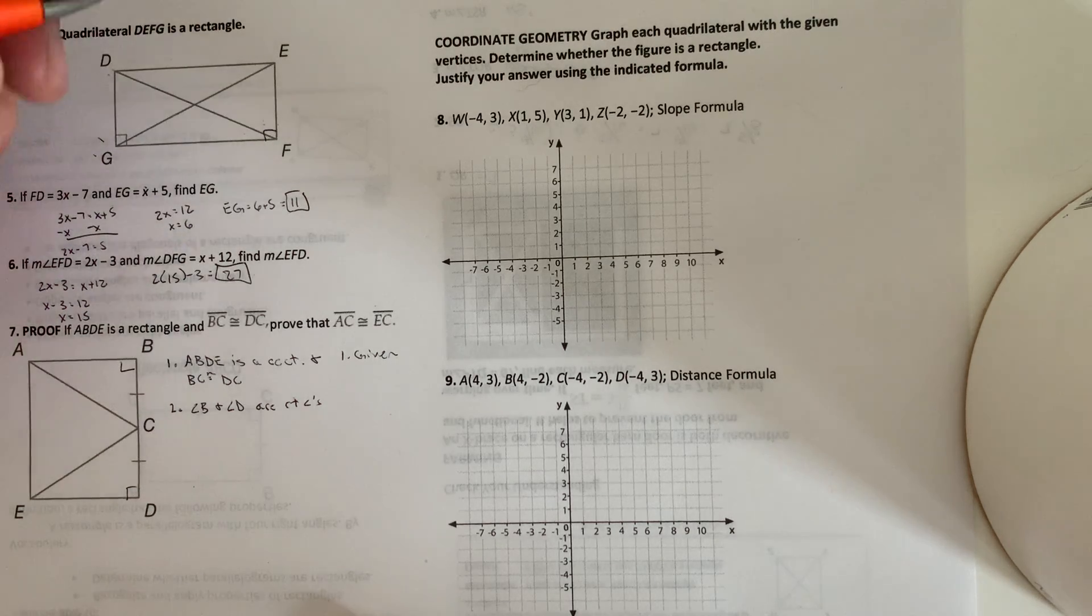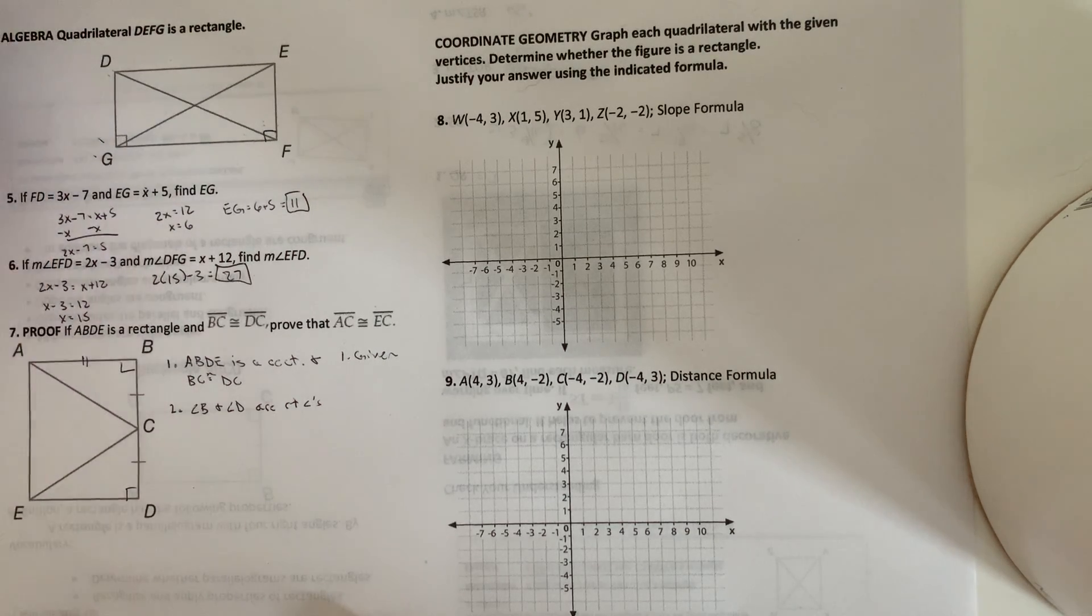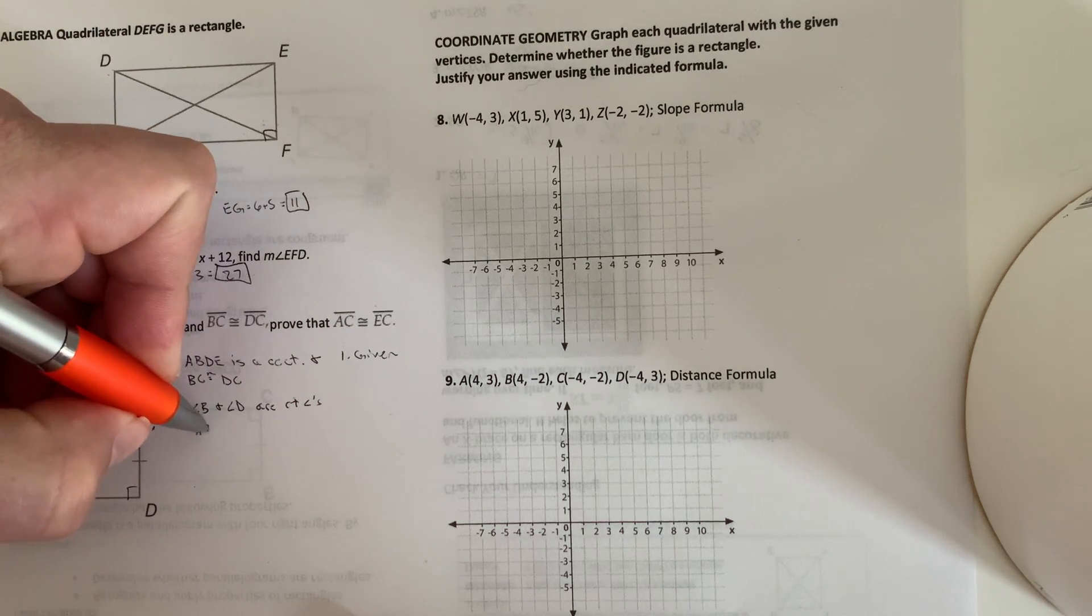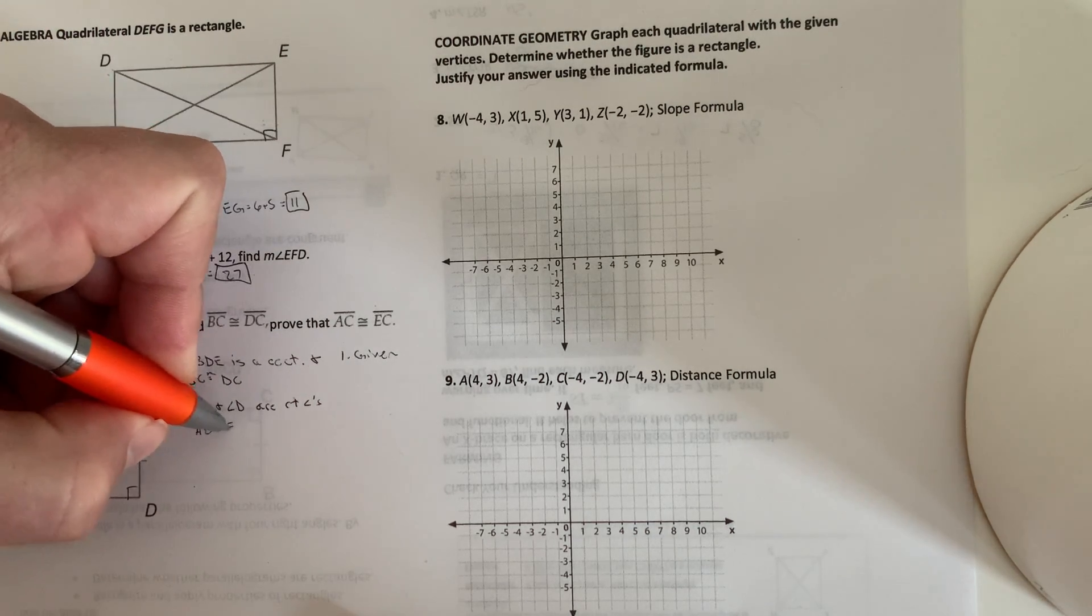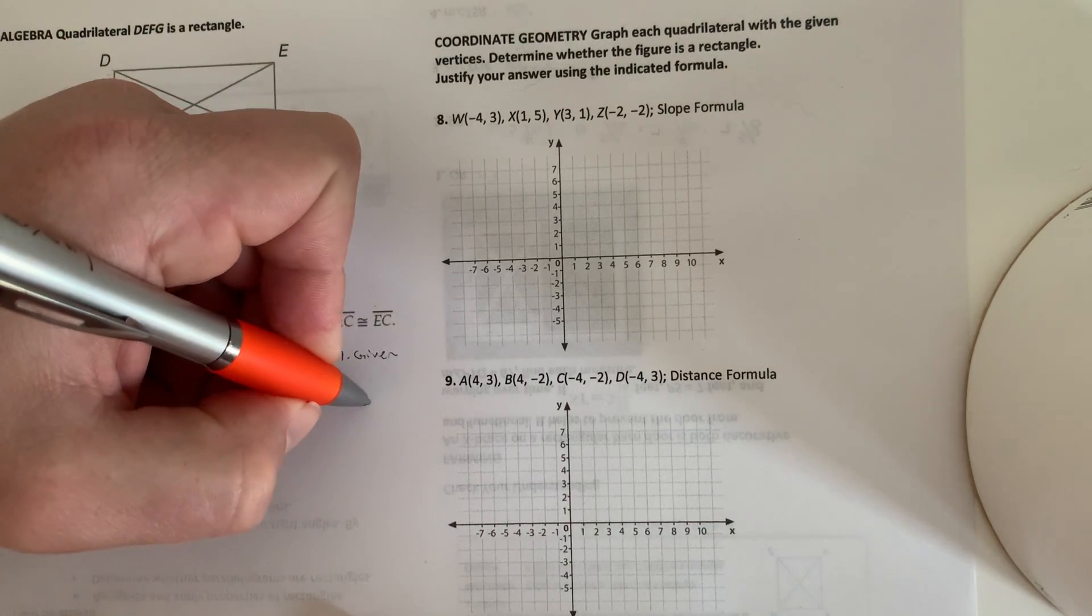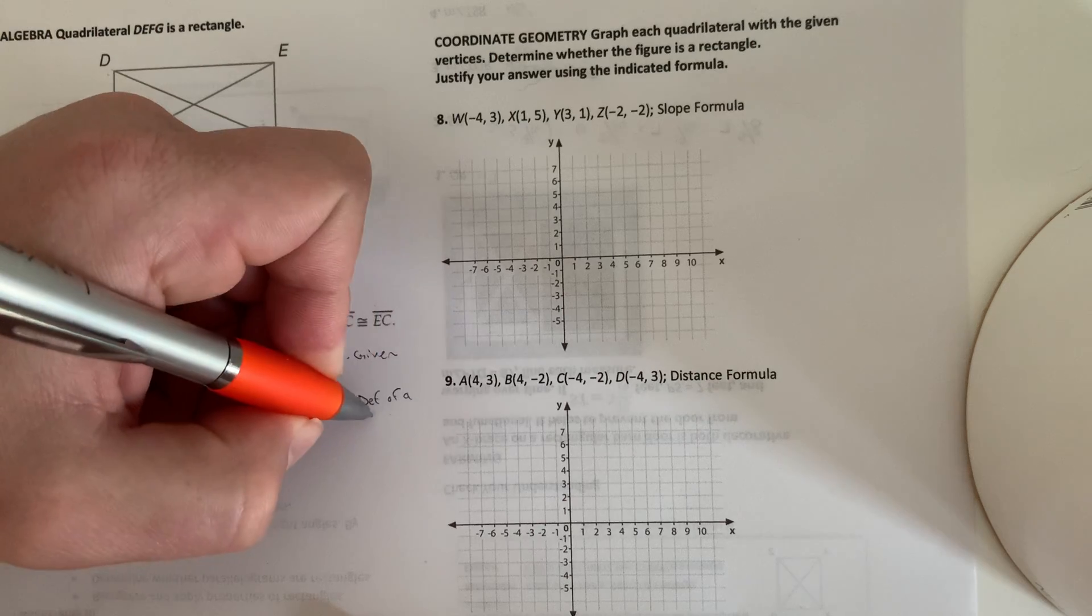But the definition of a rectangle, I would also say that this side, AB, is congruent to ED. Because of the definition of a right triangle. So I'm going to say that as well in the same step. So step 2, that's the definition of a rectangle.